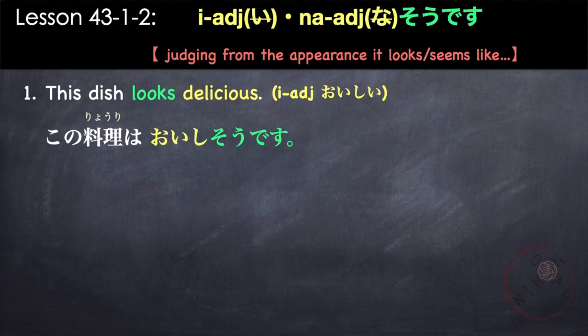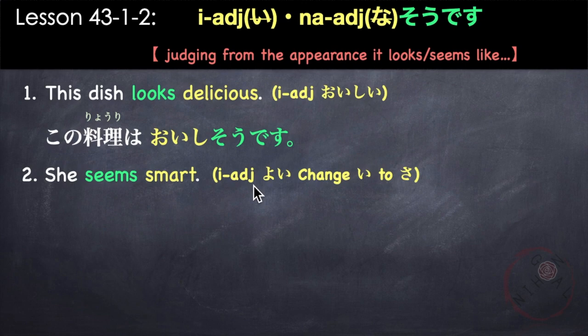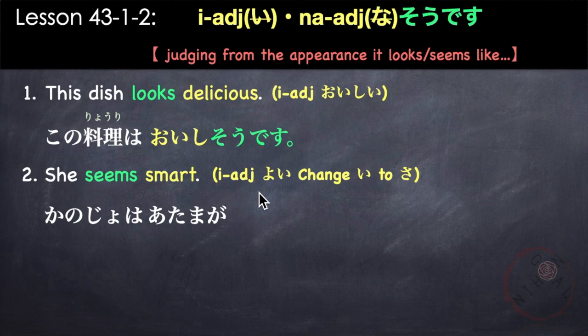Another example: 'She seems smart' — atama ga yoi. If the adjective is yoi or good, we change i to sa — this is a special case. Kanojo wa atama ga yoi, so instead of yoi, we change i to sa: yosa so desu. Kanojo wa atama ga yosa so desu.